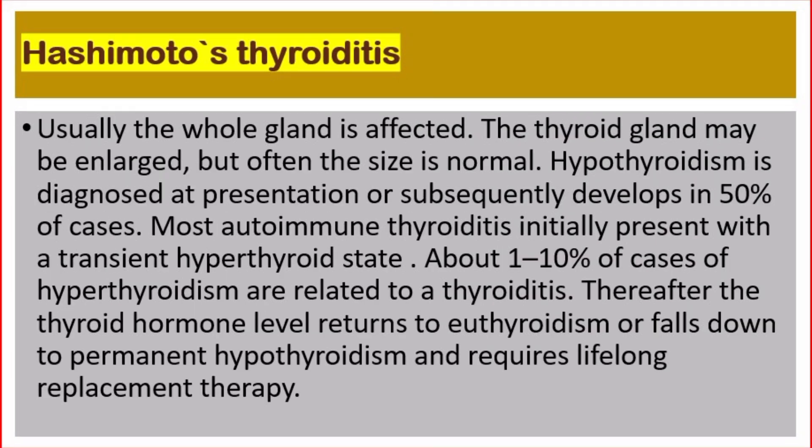Incidence peaks at 40 to 60 years of age. Usually the whole gland is affected; the thyroid gland may be enlarged, but often the size is normal. Hypothyroidism is diagnosed at presentation or subsequently develops in 50 percent of cases. Most autoimmune thyroiditis initially presents with a transient hyperthyroid state.